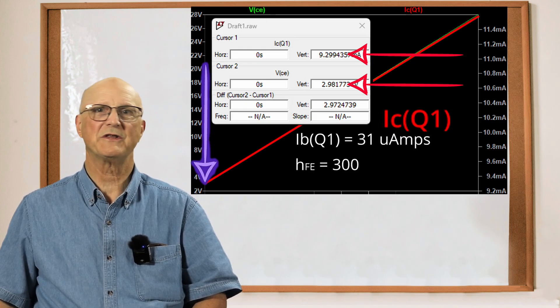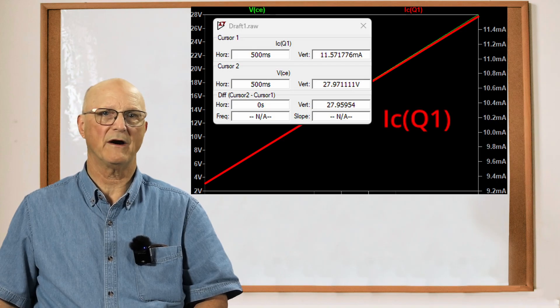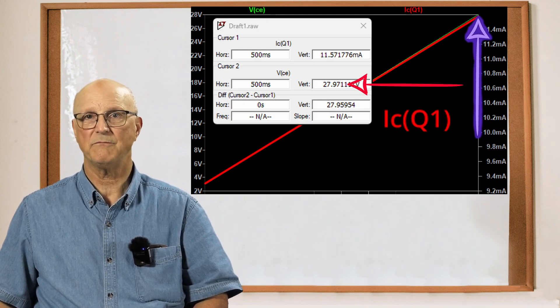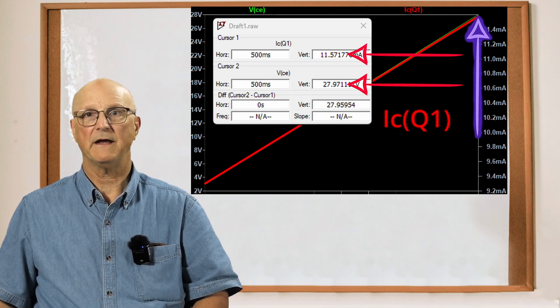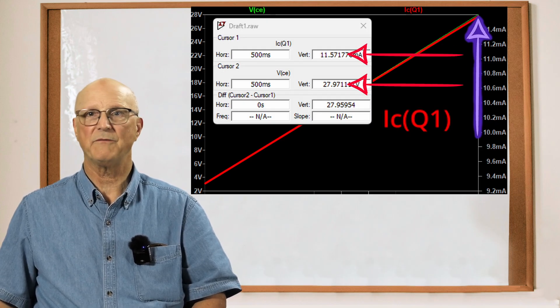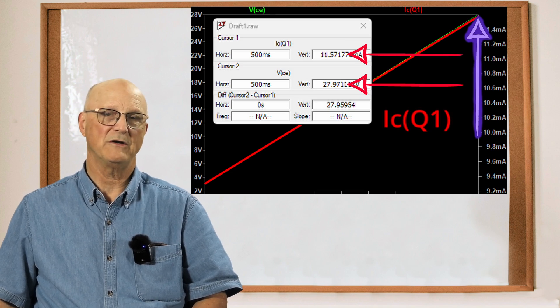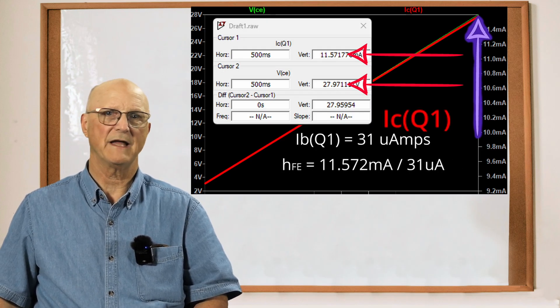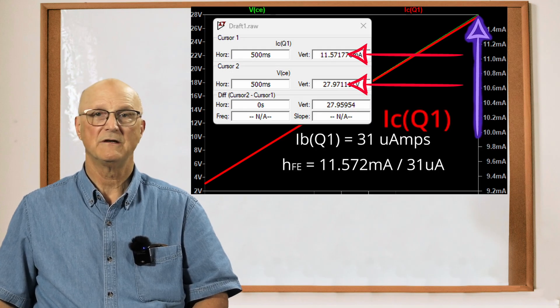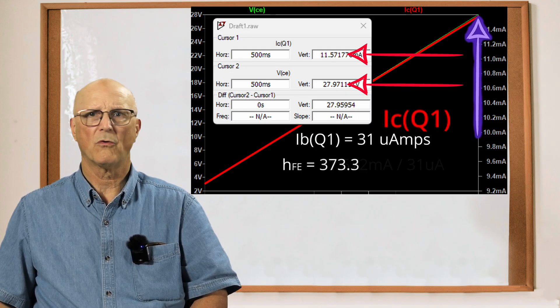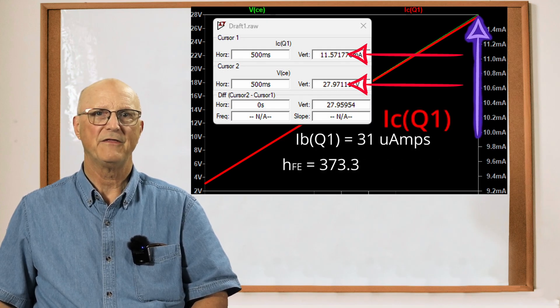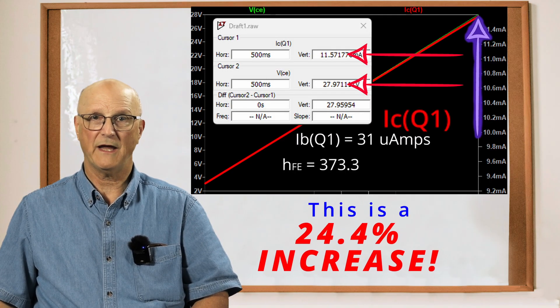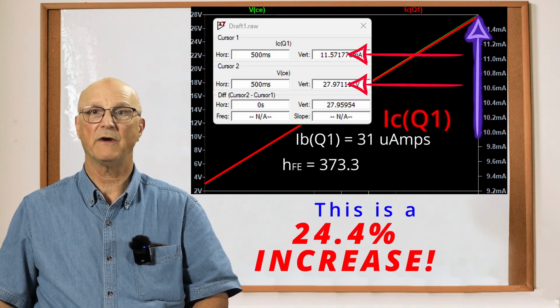Okay, so let's go to the other extreme. I have moved my cursors up to where our input voltage is 30 volts. This gives us a VCE of 27.97 volts and a collector current or IC of 11.572 milliamps. Again, we know the base current is 31 microamps. So the calculated HFE is 11.572 milliamps divided by 31 microamps or 373.3. This is an increase of 24.4% over the HFE at a VCE of 2.98 volts.